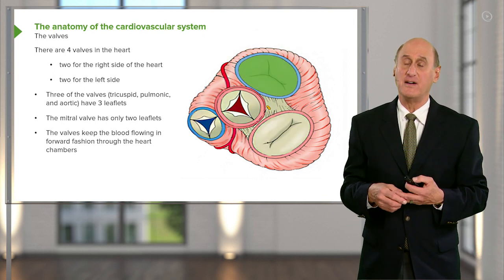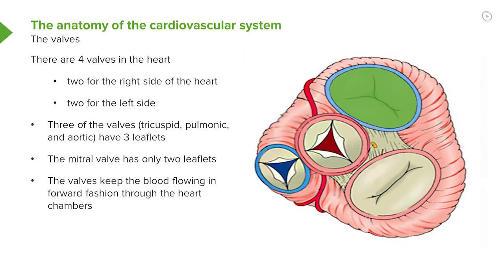Let's take the one at the top of the diagram, because that's the front of the heart, and that's the tricuspid valve. Tricuspid means three cusps, three components, and you can see that there are three parts to the tricuspid valve. So the blood is now passing through the tricuspid valve into the right ventricle, and then there's going to be right ventricular contraction, squeeze, and the blood is going out the pulmonary artery.